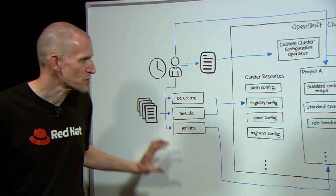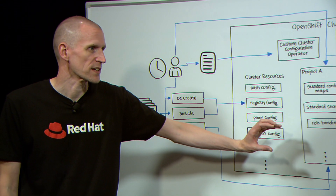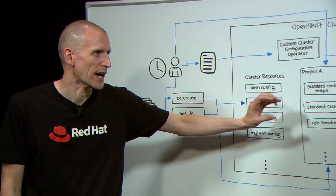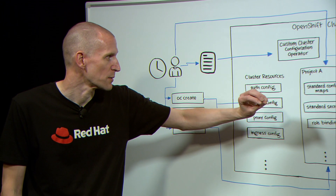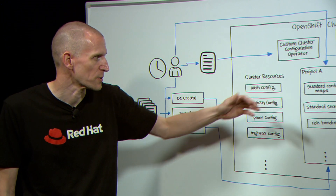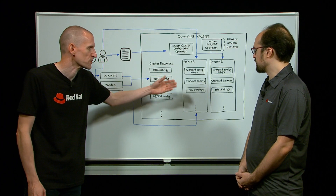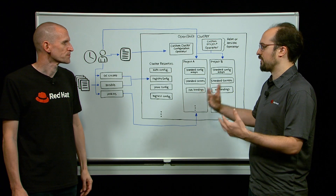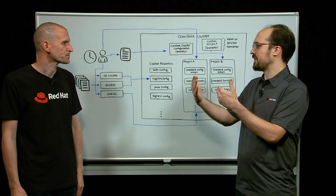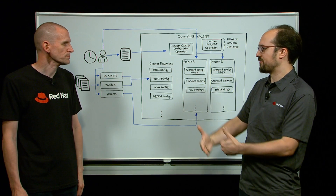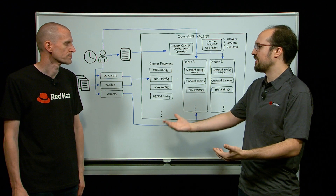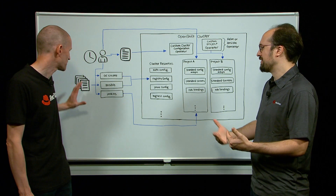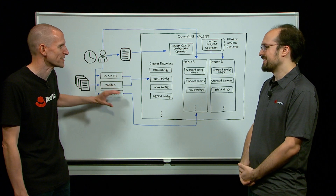That automation is used to go ahead and create the projects as well as create the objects within the project — your config maps, your secrets, your role bindings. Because of the limitation of a template only allowing one standard project, most of our customers end up not using them. This external automation process is normally what we see.